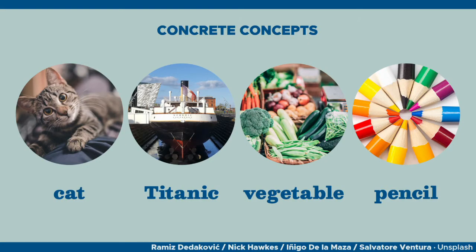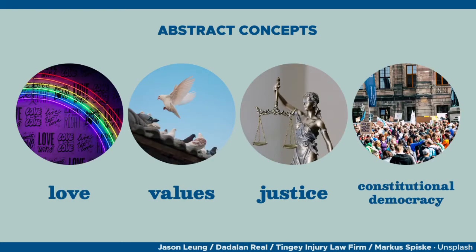Concepts can be concrete, like cat, the Titanic, vegetable, pencil — or abstract, like love, values, justice, constitutional democracy. When I ask you to give examples of things that belong to a concept, the set of things you can think of, or all the possible examples that meet the concept definition, is a category.